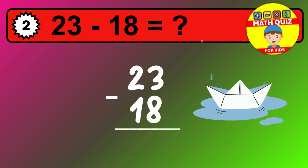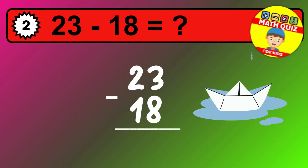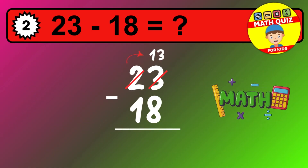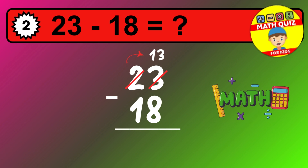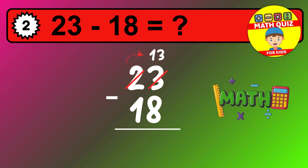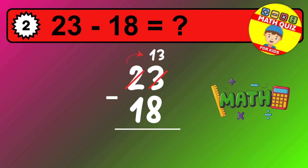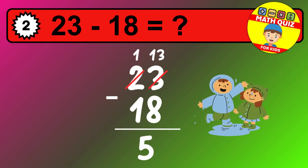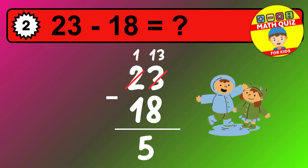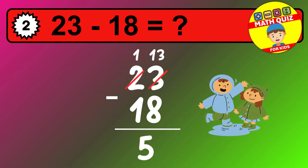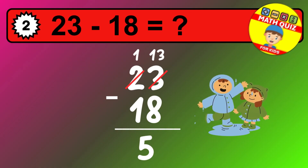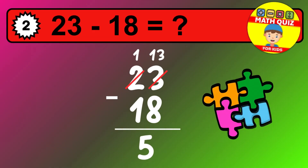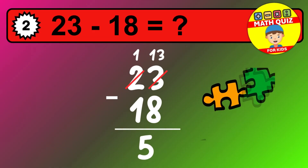Let's solve this step by step. We start with the units. 3 minus 8 is not possible, so we need to regroup. We take one 10 from the tens column. Now we have one ten, and the units become 13. Now we subtract. 13 minus 8 is 5. Then we go to the tens. 1 minus 1 is 0. The final answer is 5.